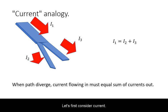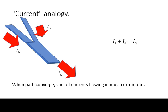Let's first consider current. Basically, the total current flowing in must equal the current flowing out. This is regardless whether the incoming current diverges or incoming currents converge.